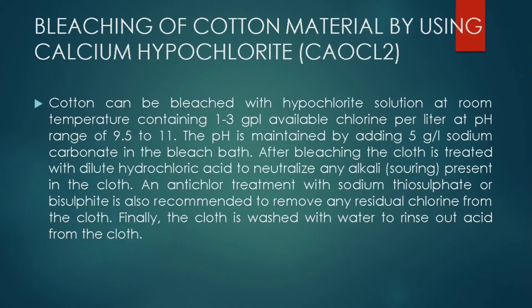So we can bleach the cotton material at room temperature. For obtaining effective bleaching results, we need to maintain 1–3 GPL available chlorine concentration in the bleaching bath. The pH is maintained by using 5 GPL sodium carbonate in the bleaching bath, which also enhances the bleaching action during the bleaching process.